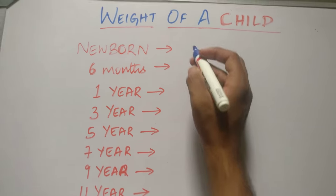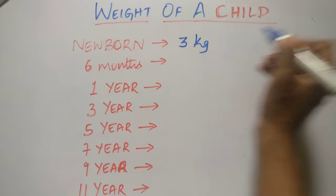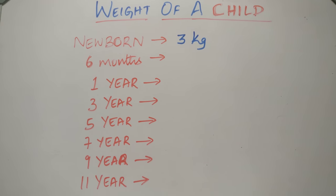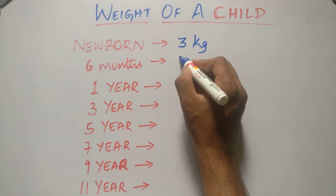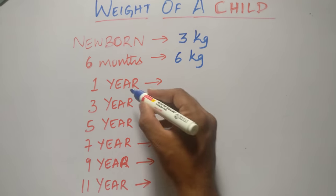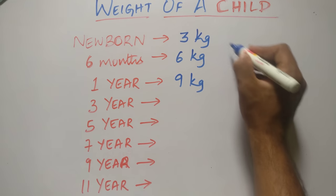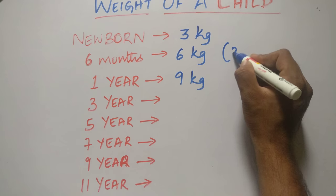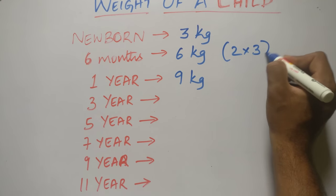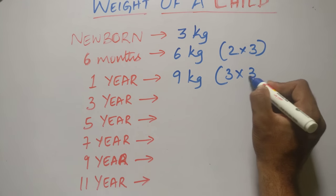There is a very easy method. We all know that the weight of a newborn is most of the times 3 kgs and this is the normal weight of the newborn. The weight of the child doubles at 6 months of age, it becomes 6 kgs. It triples at 1 year of age, it becomes 9 kgs. Therefore weight of the child doubles at 6 months of age, triples at 1 year of age.